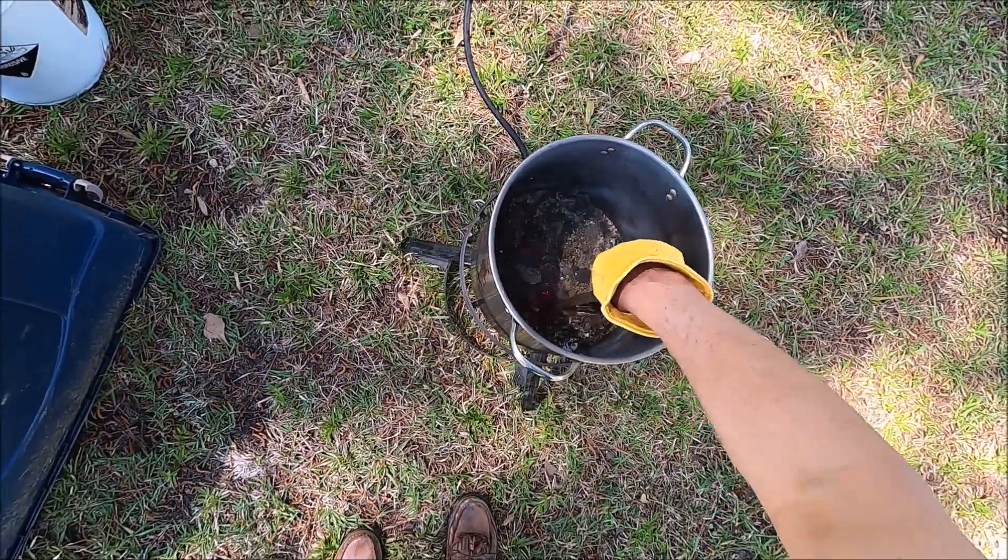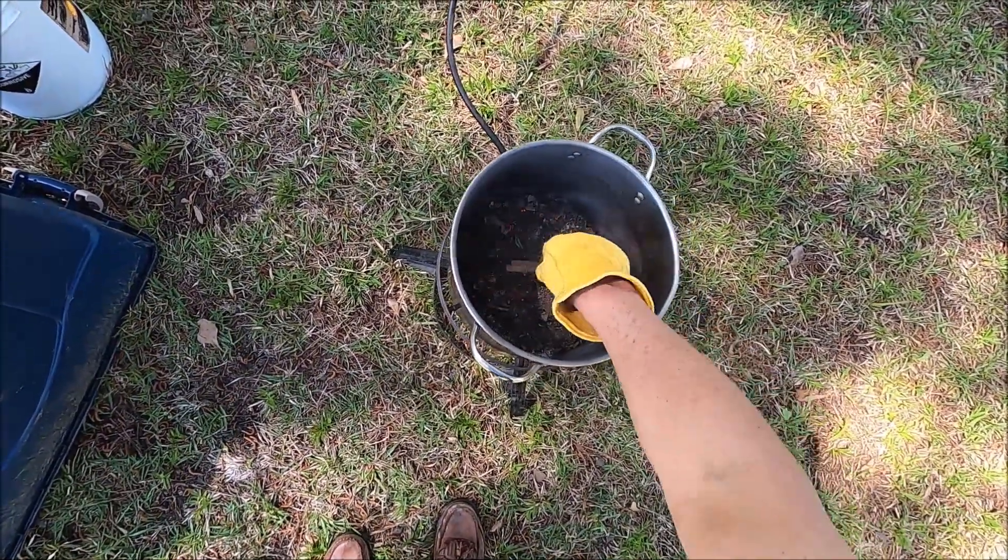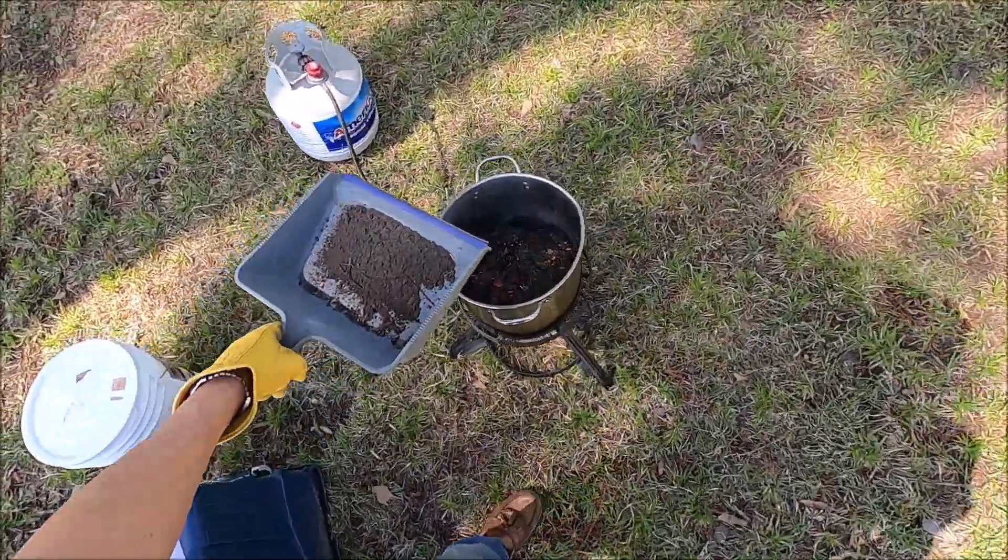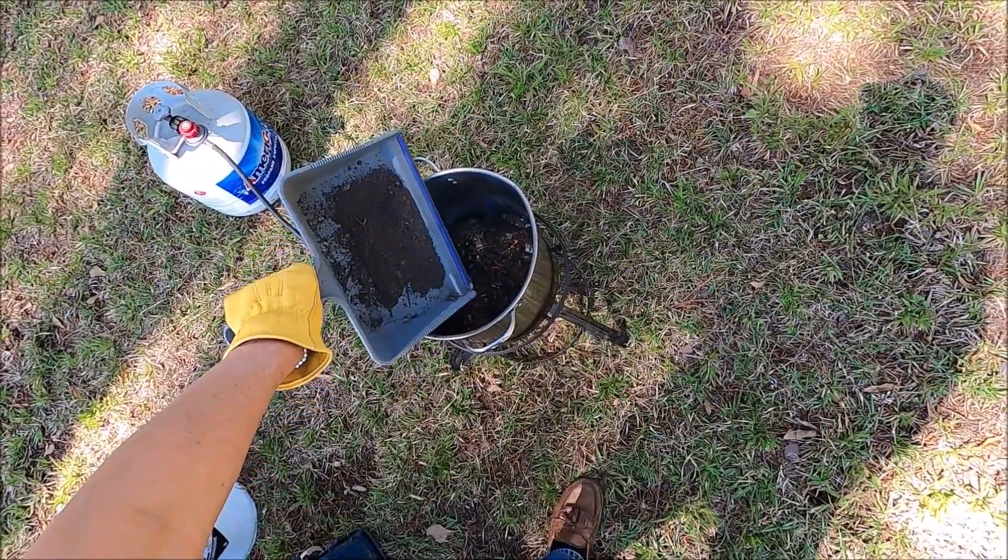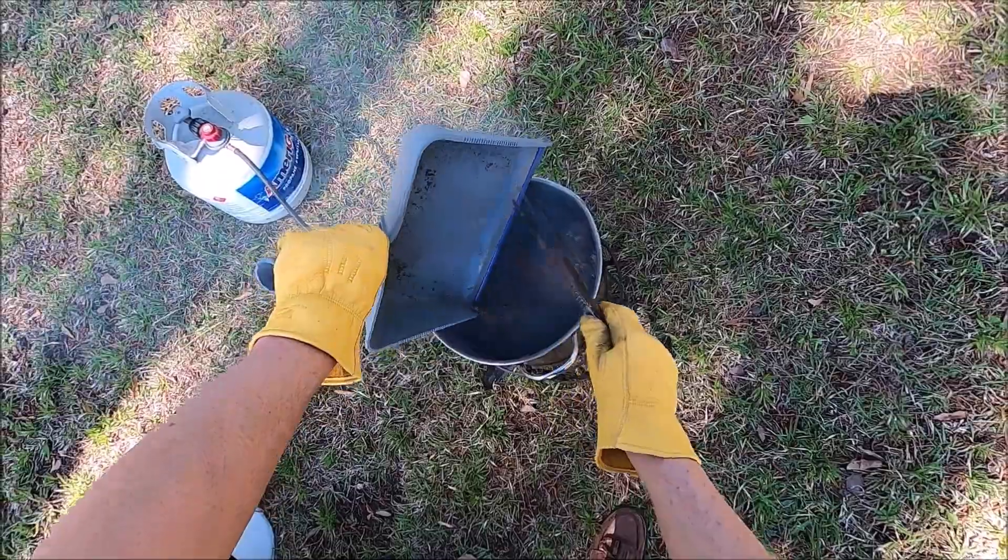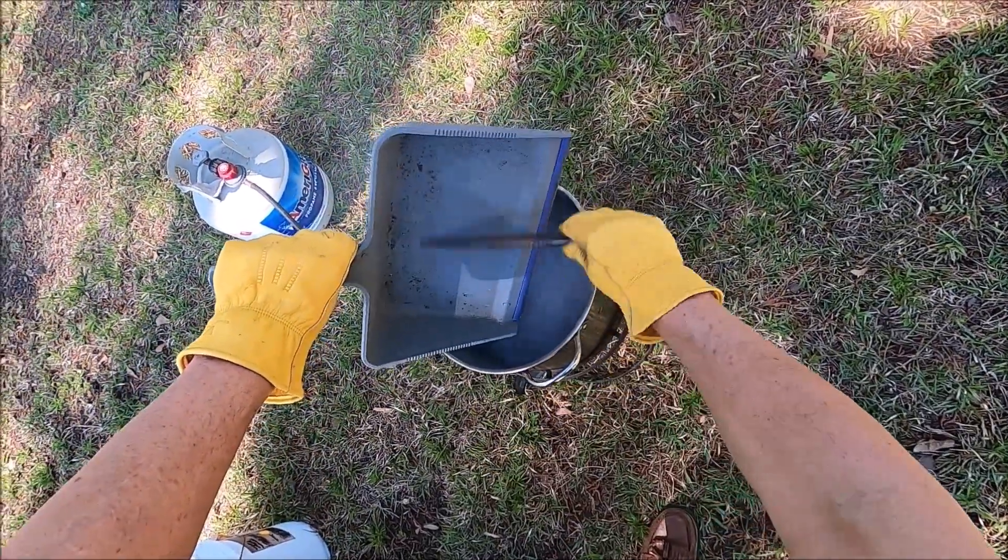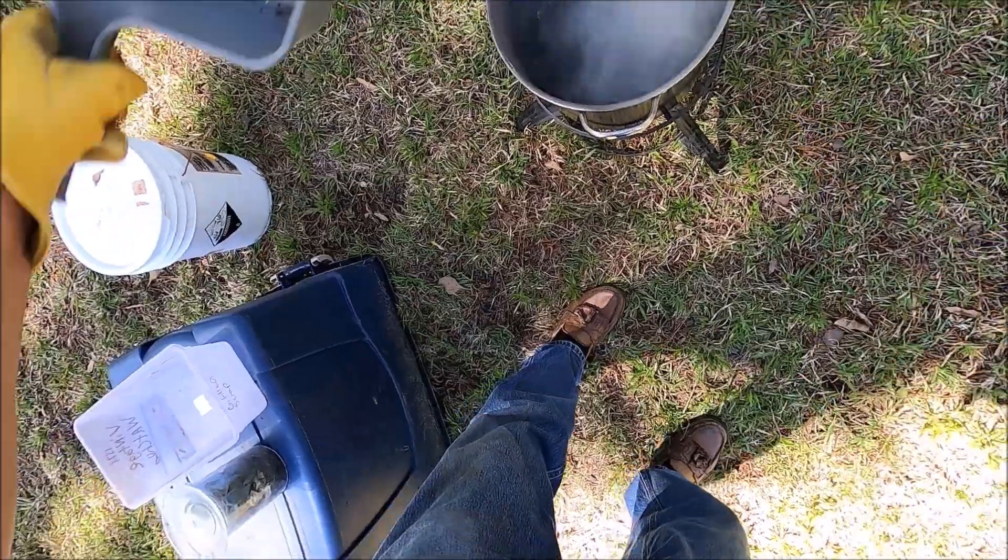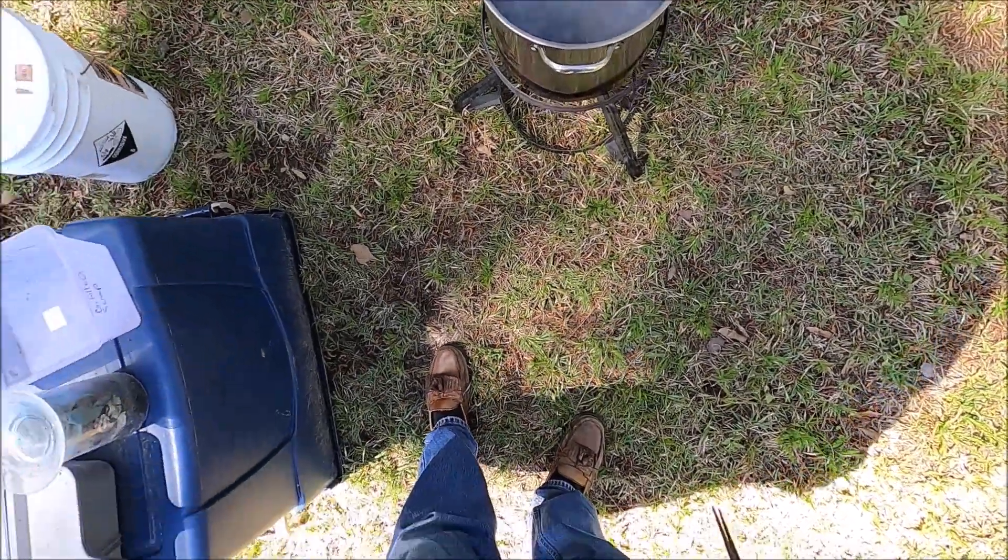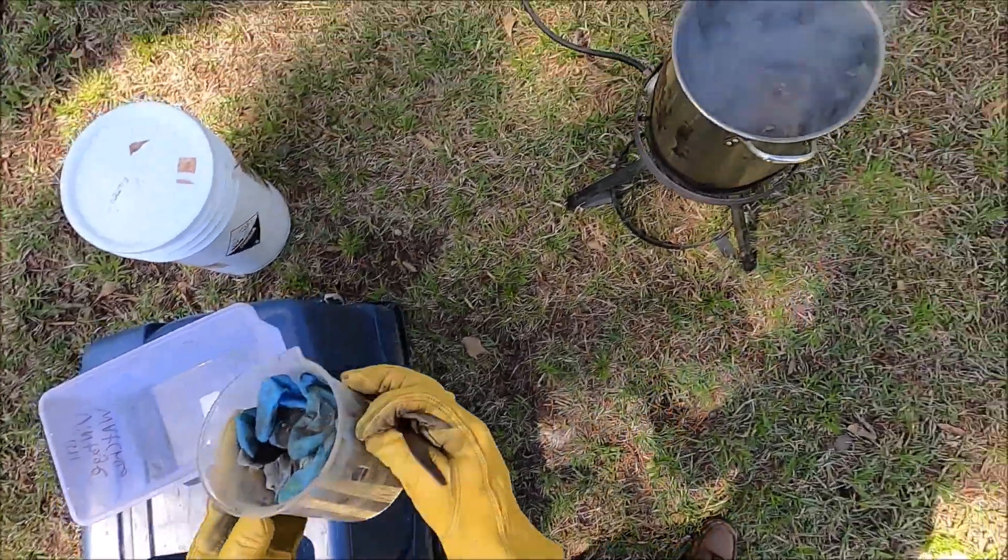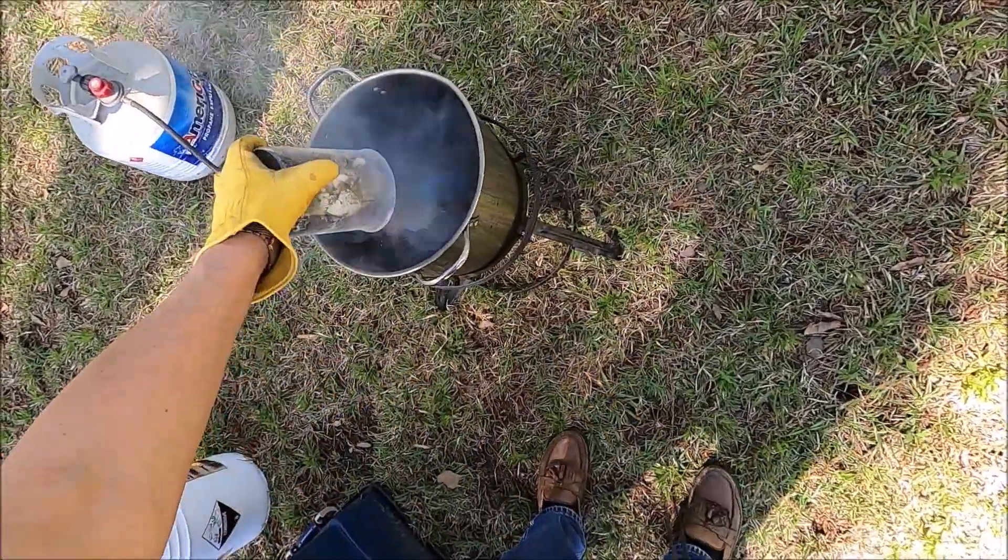That first group of paper is already burnt to a fine ash as you can see there. Now I'm going to add the scrapings off the back of the baffle out of my fume hood. While I had that baffle out I scraped all that material off of it and I saved it just in case it contains any precious metals.